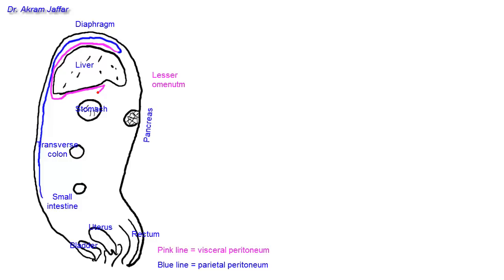The lesser omentum runs between the liver and the lesser curvature of the stomach. Then the peritoneum passes on the anterior surface of the stomach to the greater curvature, and is reflected from the greater curvature as the greater omentum. This is the anterior layer of the greater omentum.